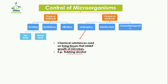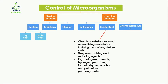Disinfectants are chemical substances used on non-living material to inhibit the growth of vegetative cells. For example, the solution used to clean a table before performing an experiment is a disinfectant. They are oxidizing and reducing agents, and examples include halogens, phenols, hydrogen peroxide, formaldehyde, alcohol, and potassium permanganate.